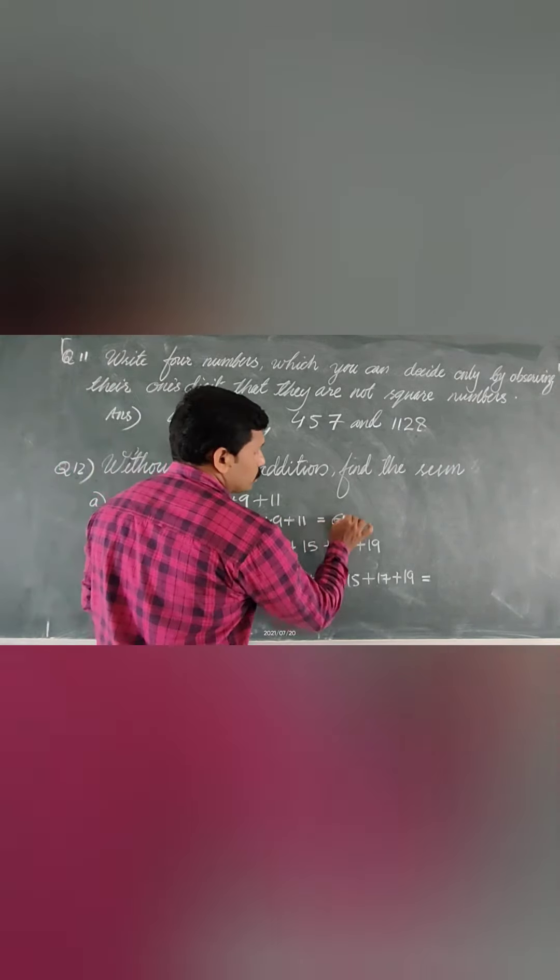For the second part, count how many numbers are added: 1, 2, 3, 4, 5, 6, 7, 8, 9, 10 — 10 odd numbers are added. Therefore the sum equals 10 squared, which equals 100. When we add those numbers, we also get 100.